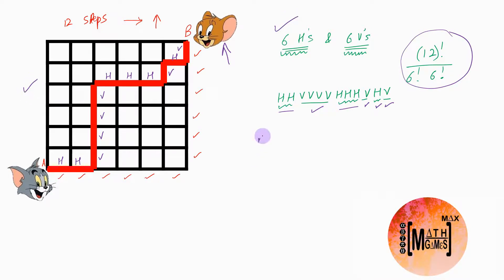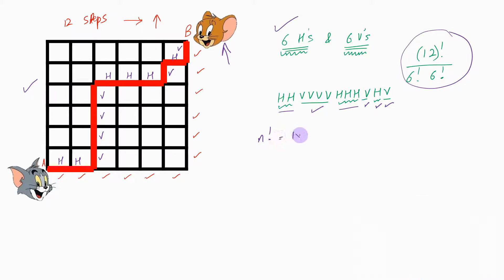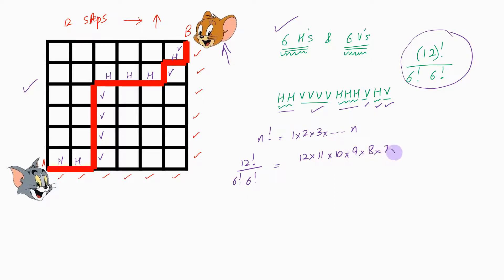Now what is 12 factorial? n factorial is given by the product of the first n natural numbers, that is 1 × 2 × 3 × ... × n. So 12 factorial divided by 6 factorial times 6 factorial equals 12 × 11 × 10 × 9 × 8 × 7 × 6 factorial, divided by 6 × 5 × 4 × 3 × 2 × 1 × 6 factorial. Now let us calculate — the 6 factorials will cancel.